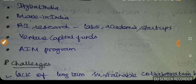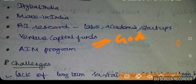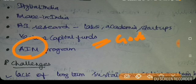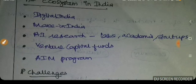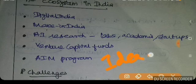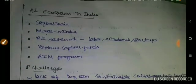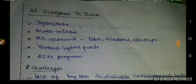Venture capital funds are available — not only from the government but also from private and angel investors. The AIM program — Atal Innovation Mission — is an innovation initiative where students and startups develop final products. This forms the overall AI ecosystem.